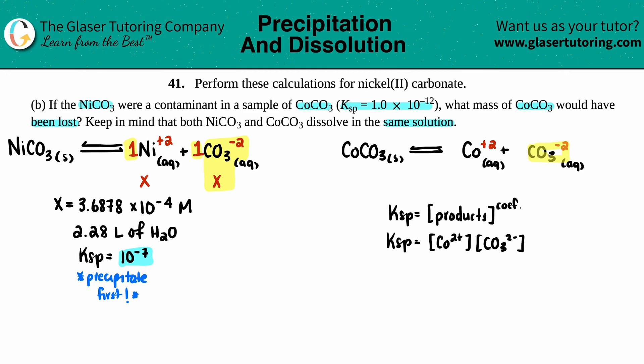Whatever we started off with here was the answer to the last problem: 3.6878 times 10 to the negative fourth. That's the starting concentration for the carbonate in the cobalt(II) carbonate equation. This is not going to be x because the nickel one already precipitated. I don't know what the cobalt ion is, so I'm going to label that as x.